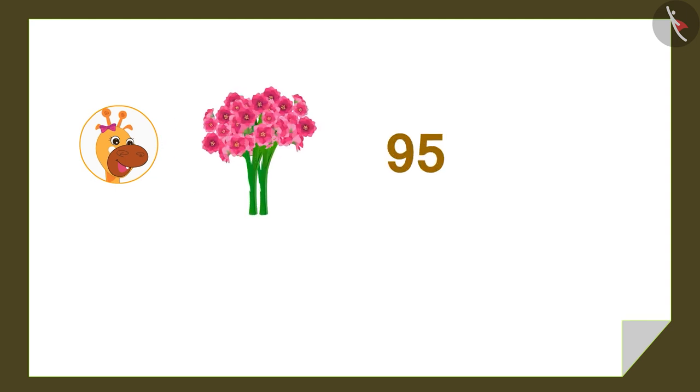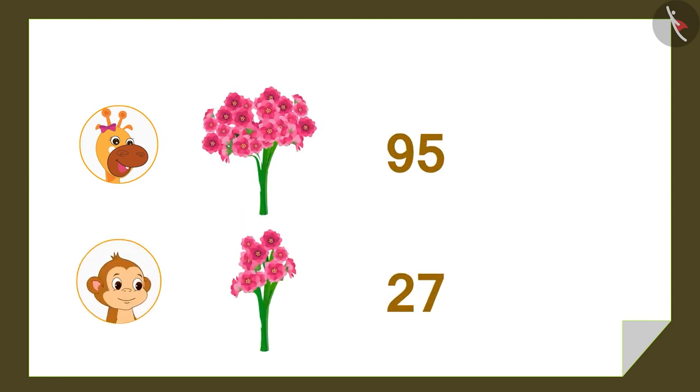Let's start with this question. Gaffee has 95 flowers and gave 27 flowers to her friend Babloo. To find out the number of flowers left, we can use subtraction.